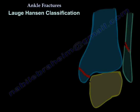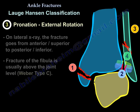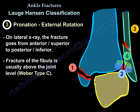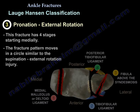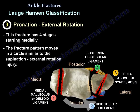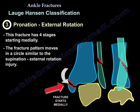The third type is the pronation-external rotation injury. In this case, the fracture goes from anterior-superior to posterior-inferior, and the fracture is usually above the joint level — it is usually a Weber C fracture. This fracture has four stages and moves in a circle similar to the supination-external rotation injury, but it starts medially at the medial malleolus or the deltoid.